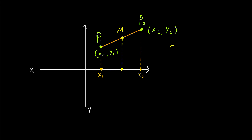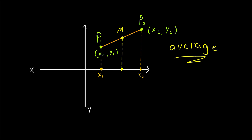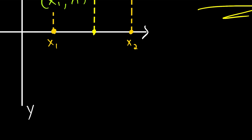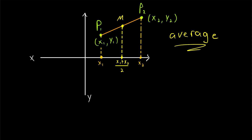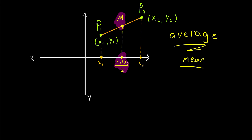So how do we find that x-coordinate? Well, the phrase 'halfway between' might make you think of the word average. And indeed, to find the x-coordinate halfway between x1 and x2, we just have to take their average. To find the average of x1 and x2, we just add them up — x1 plus x2 — and then divide their sum by 2. That is the average, or what's also sometimes called the mean, of those two x-coordinates. And so that's how we find the horizontal position of the midpoint.